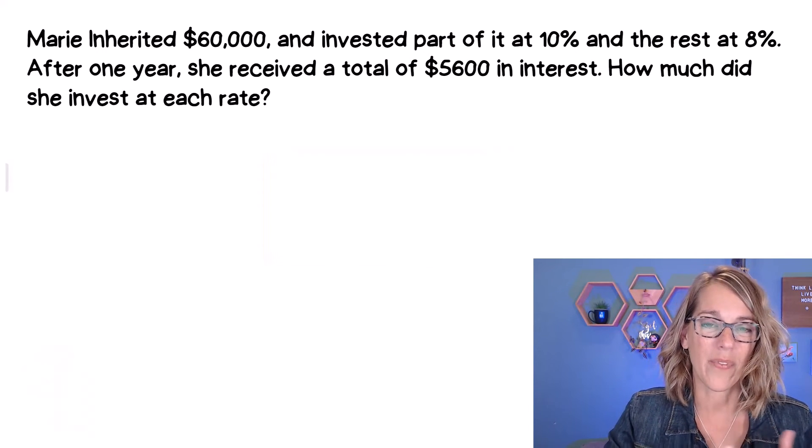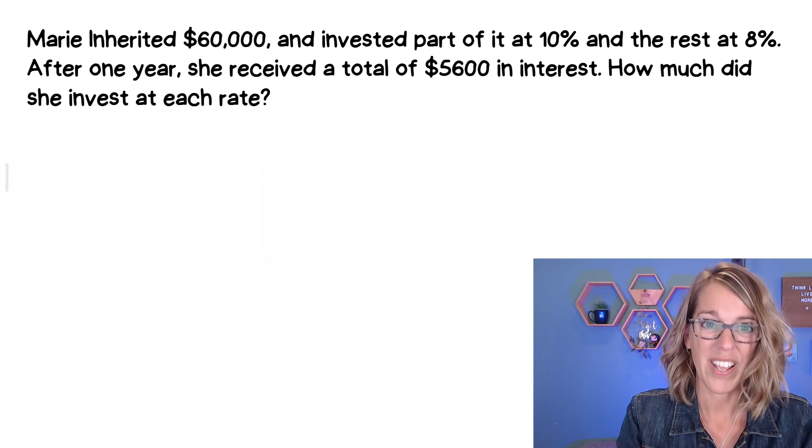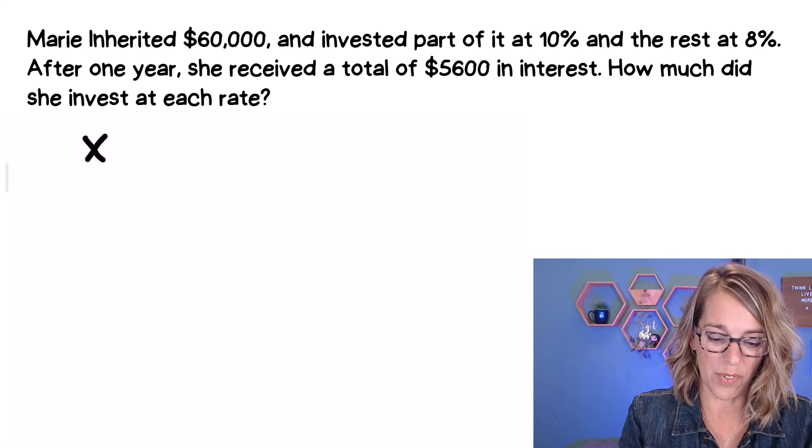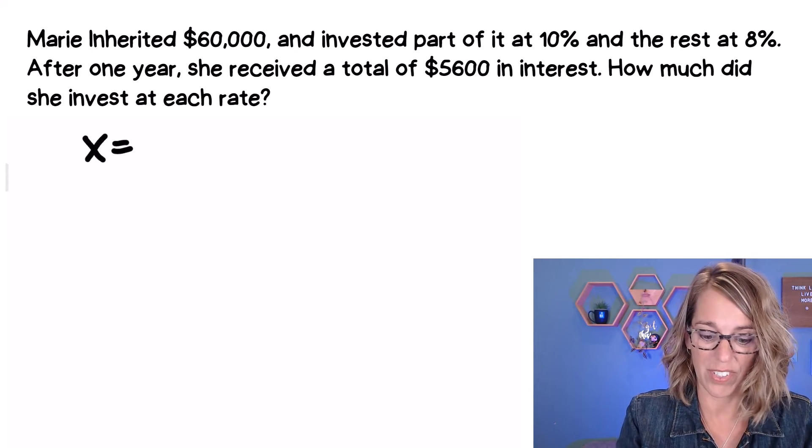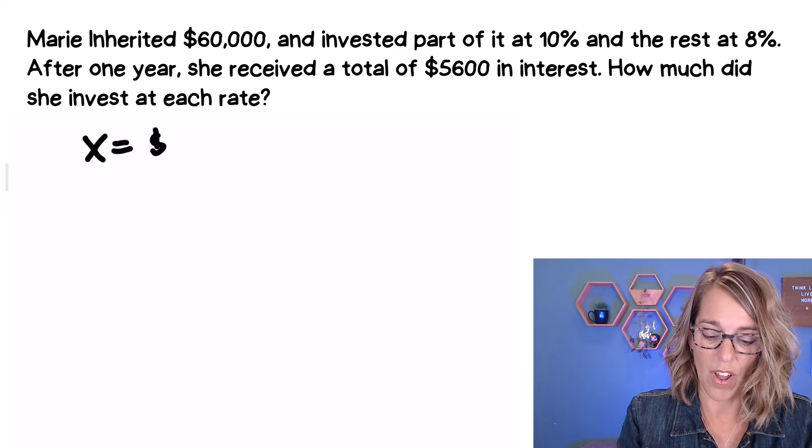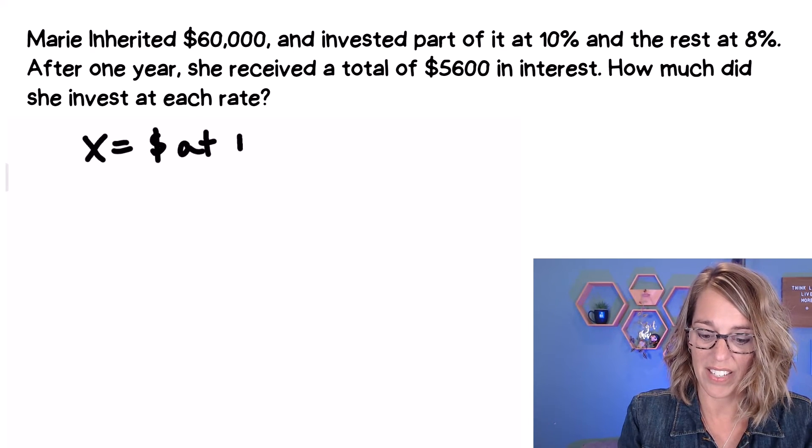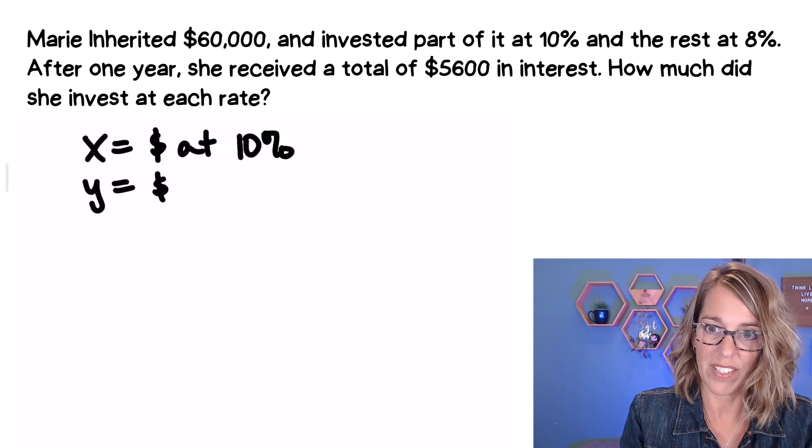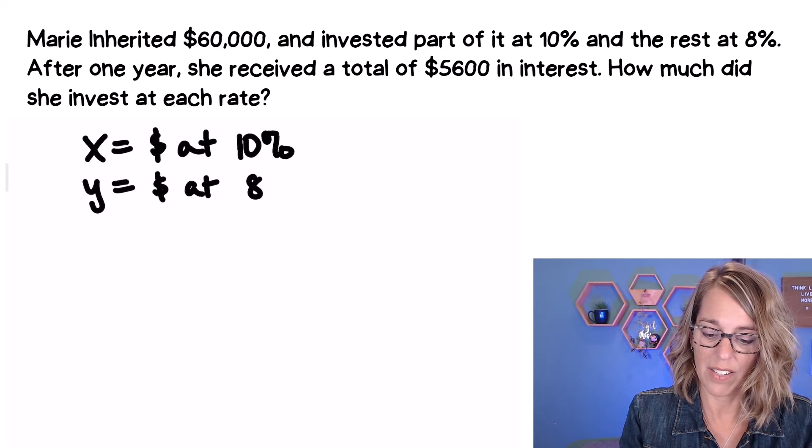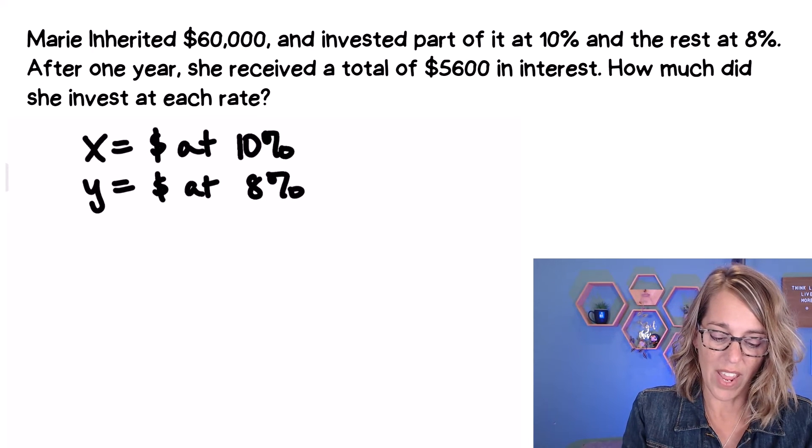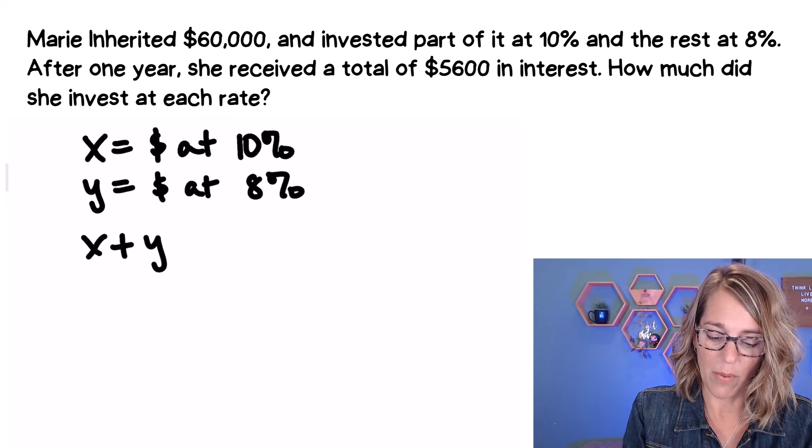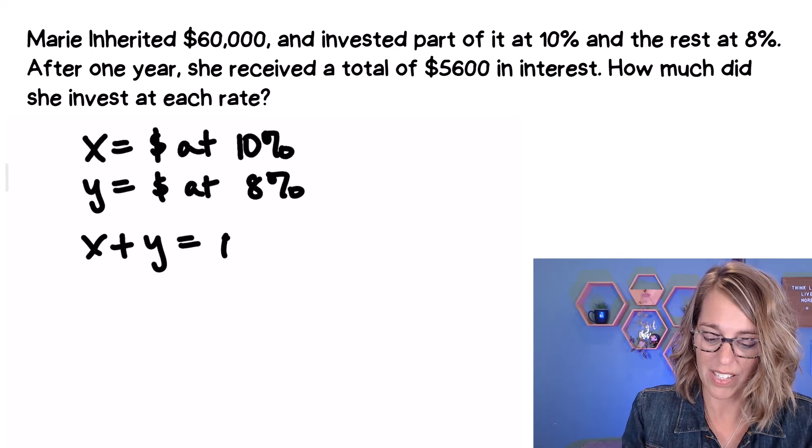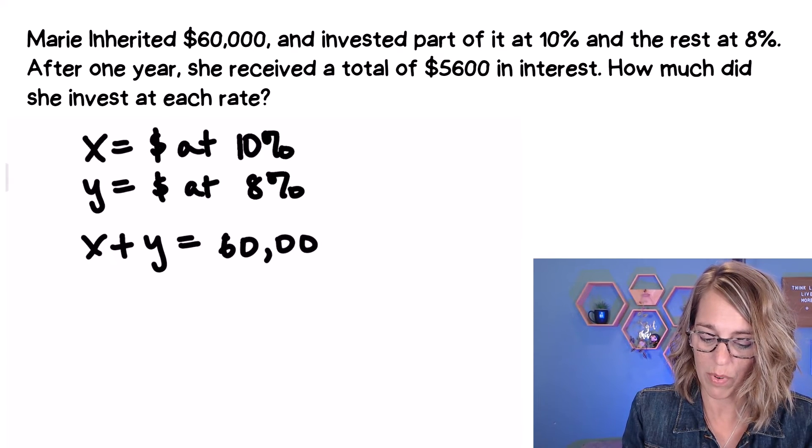Okay. So let's set this one up. First of all, we need some variables. So I'm going to let X equal, remember, these are always amounts. So this is going to be the dollars invested at 10%. And then we'll let Y be the dollars invested at 8%. And I know if I add up all of the money that was invested, X plus Y is $60,000. Super nice.